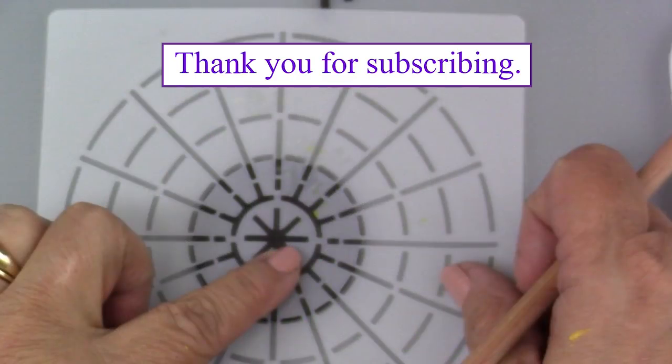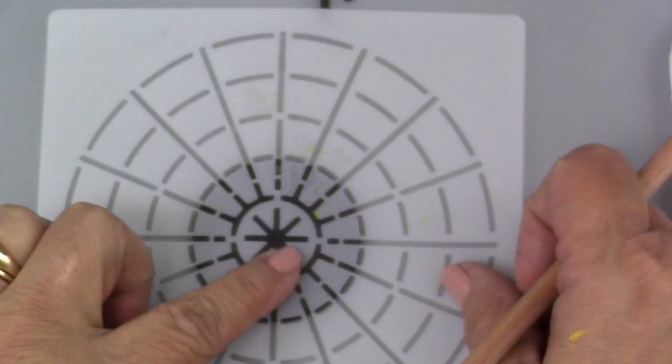I hope you subscribe. I want to thank you if you have subscribed. This is how we get started, placing our grid on our pendant blank. I'm using a domed wood pendant blank, but you could also use a flat blank or practice on 2-inch cardstock.